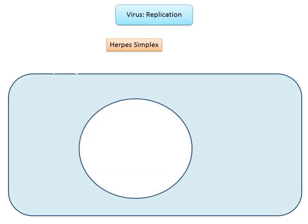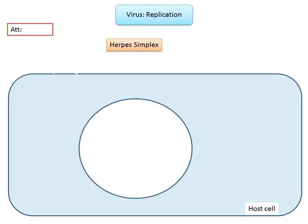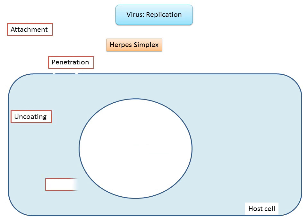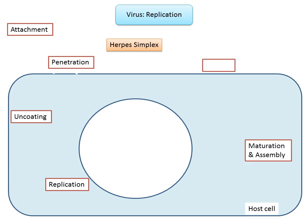The stages of viral replication can be broadly summarized into attachment, penetration, uncoating, replication, maturation and assembly, and ultimately release of the newly formed virions. The replication stage differs greatly between species and categories of viruses.